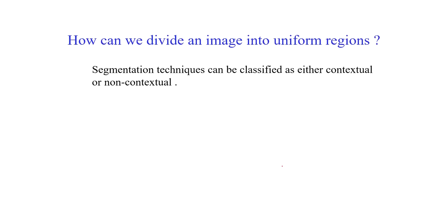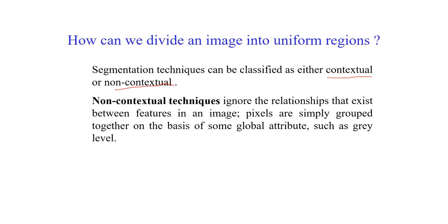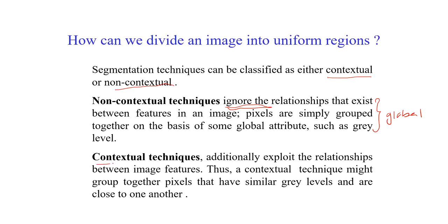In general, image segmentation can be divided into two main categories: non-contextual and contextual. Non-contextual means the algorithm ignores the relationship between features in the image — this is generally called the global method, using a single value to perform segmentation throughout the entire image. Contextual techniques exploit the relationship between image features and are called local methods, using different threshold values or methods for different locations inside the image.